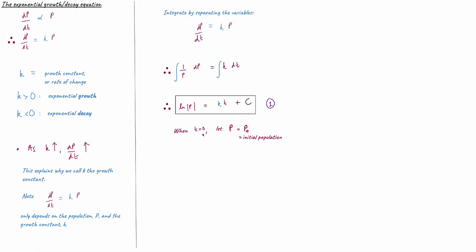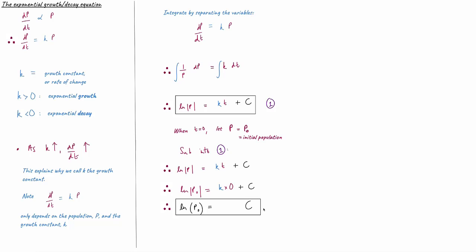Let's say that when t equals zero the population P is equal to P naught — that's the initial population size, the size of the population when time is zero. We substitute this into equation number one: substituting t equals zero and P equals P naught, we get the natural log of P naught on the left. Since k times zero is just zero, we see that c, the constant of integration, equals the natural log of P naught.